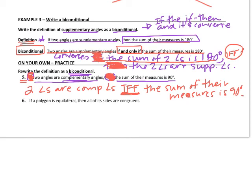Now try this last one: if a polygon is equilateral, then all of its sides are congruent. If you have any questions about writing biconditionals or any of the converse, inverse, contrapositive, or writing an if-then statement, please make sure you ask when you get to class.